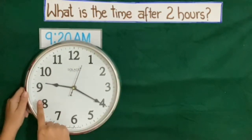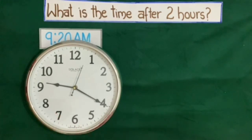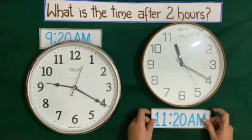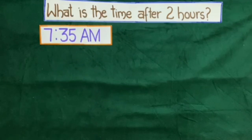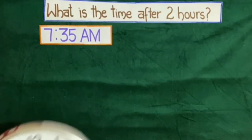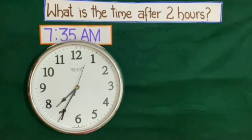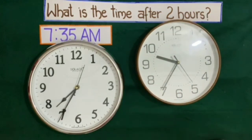Here on the clock the time is 9:20 AM, so after 2 hours the time will be 11:20 AM. Next question: the time given is 7:30 AM. Here on the clock the time is 7:30 AM, so the time after 2 hours will be 9:30 AM.